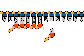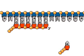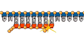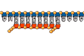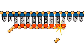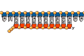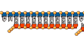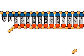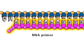G pairs with C. A pairs with T. C pairs with G. Since ribonucleotides are being added, U pairs with A. The new strand has a base sequence complementary to the parent strand, but consists of RNA. It is referred to as an RNA primer.